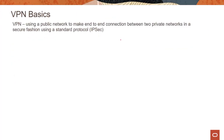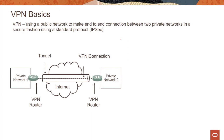Before we get into the details, let's look at some of the basics of VPN. VPN basically uses a public network to make an end-to-end connection between two private networks in a secure fashion using a standard protocol like IPsec. This is basically how VPN works — you have two different private networks and they want to create an end-to-end connection over an unsecured channel like the internet, and using VPN, they could do that.